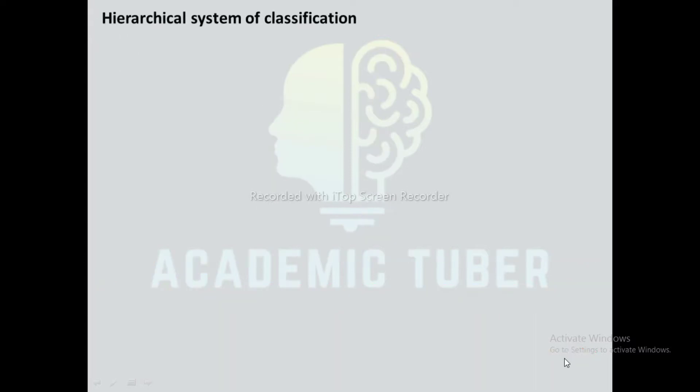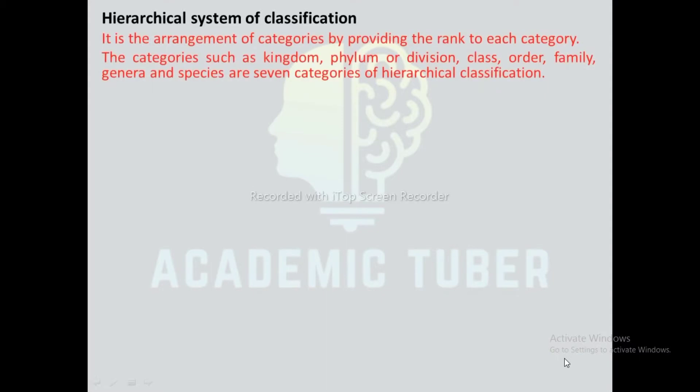Hierarchical system of classification: It is the arrangement of categories by providing a rank to each category. The categories such as kingdom, phyla or division, class, order, family, genera and species are the seven categories of hierarchical classification.